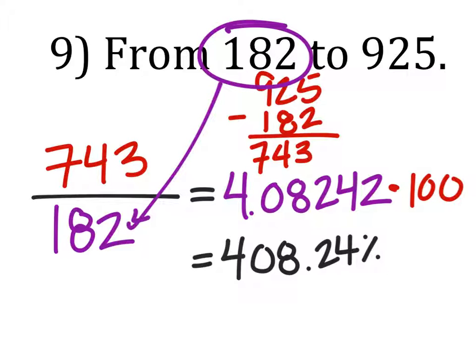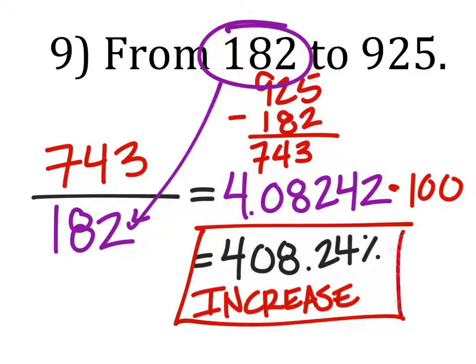This is what you write on the test. You're going to get it wrong because, once again, we must indicate if it's increase or decrease. This one is an increase. So you have to write that in there if you want full credit for that.